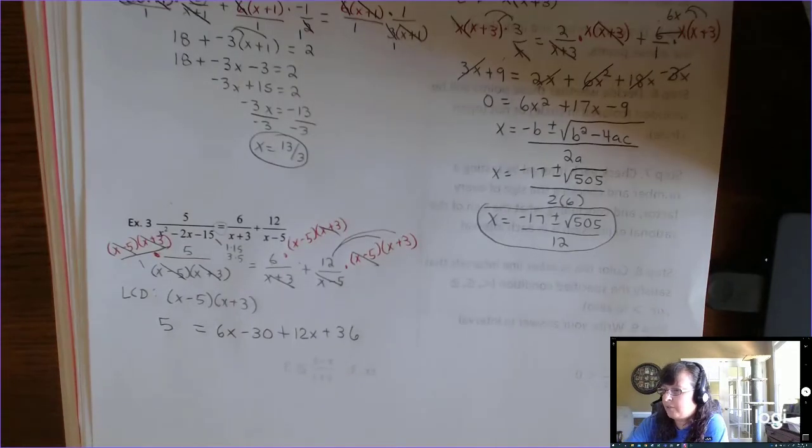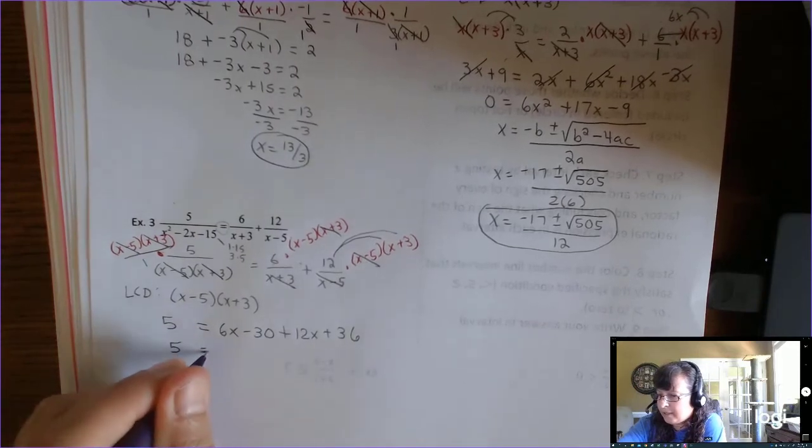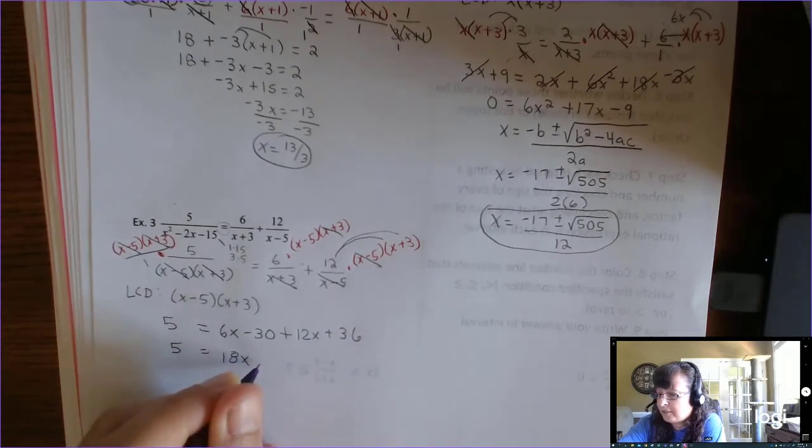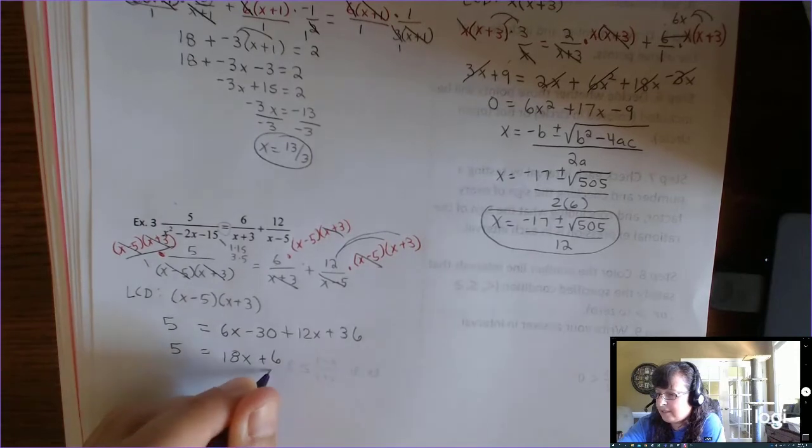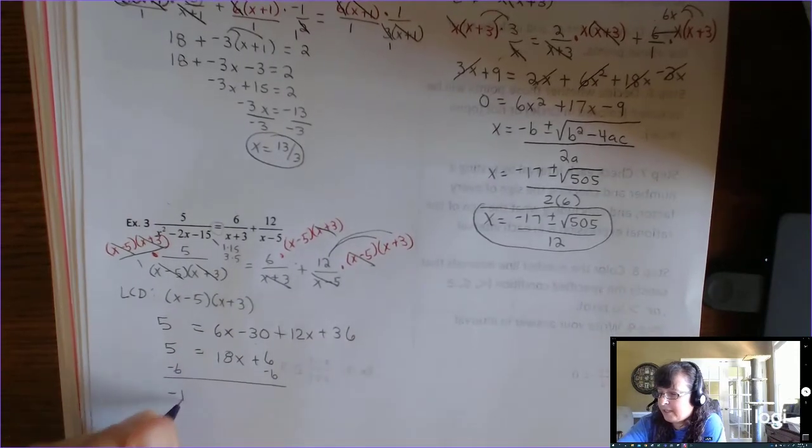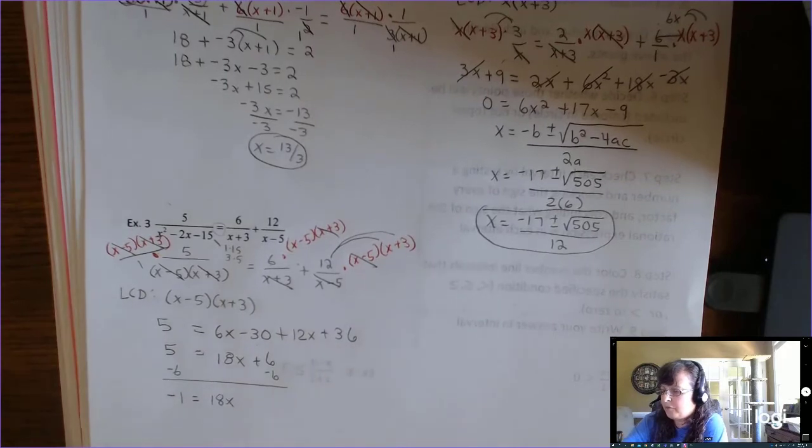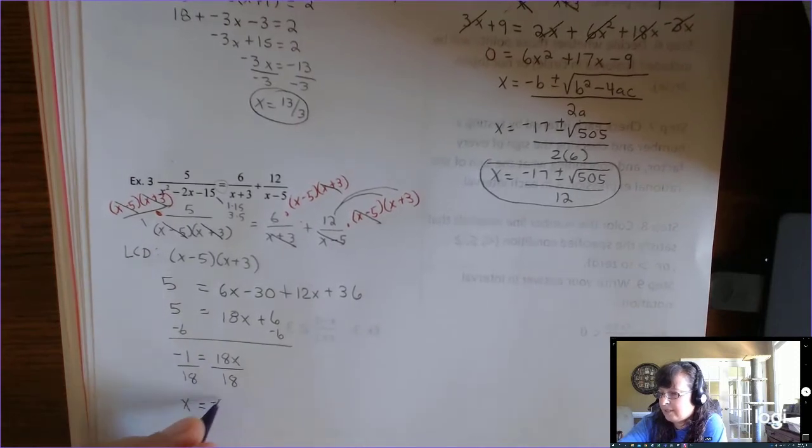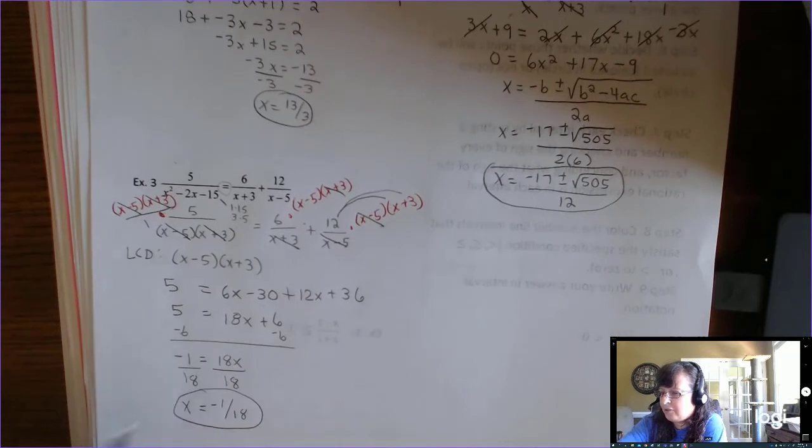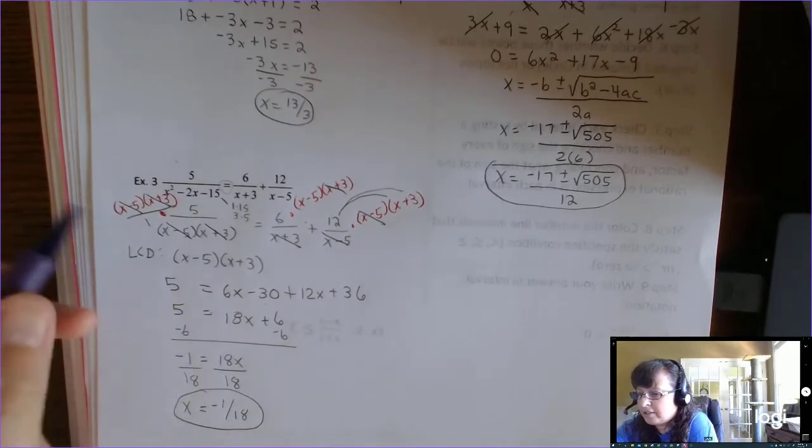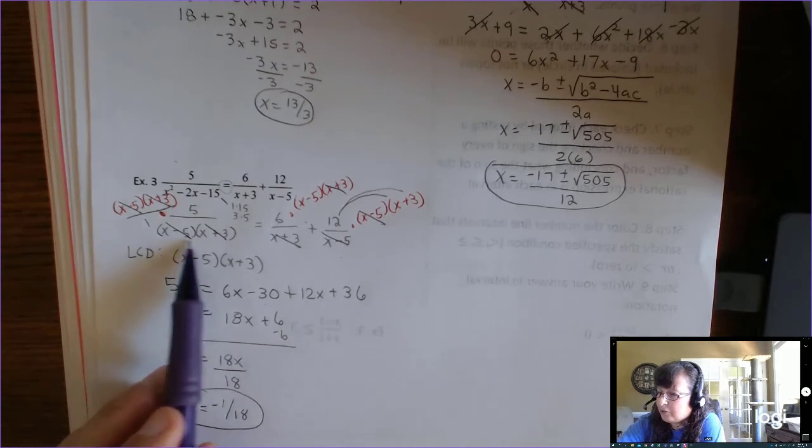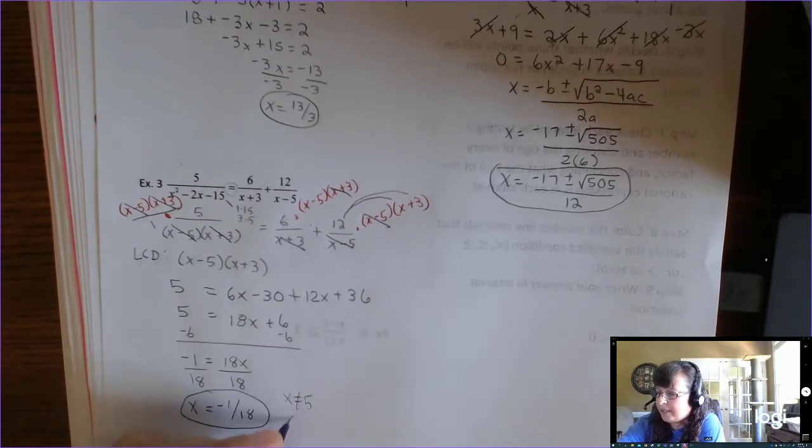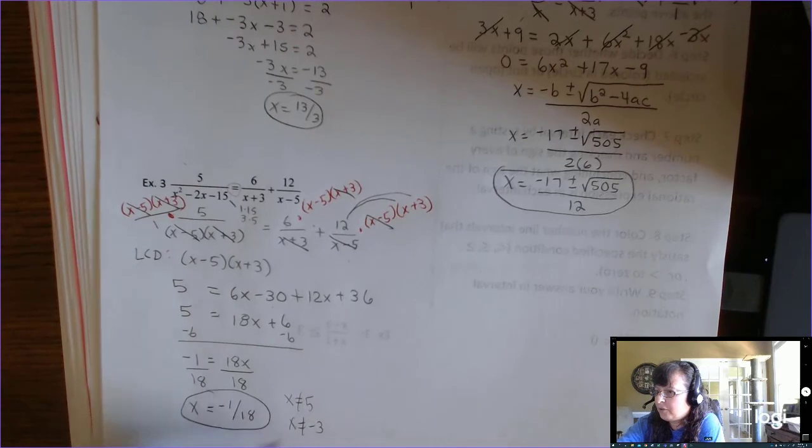And this time we don't have a quadratic. So we just need to solve for x. So I'll combine like terms. We have 6x and 12x. That's 18x. We have negative 30 and 36. That's 6. Subtract 6. You get negative 1 equals 18x. Don't divide by the wrong thing. You're trying to get x by itself. Divide by 18. And you get x is negative 1 over 18. And I knew it would happen. I forgot to check my restrictions. See, you can check them at the end. If you look right here where it's factored, x can't be 5 and x can't be negative 3. And as long as your answer isn't either of those two, you're good.